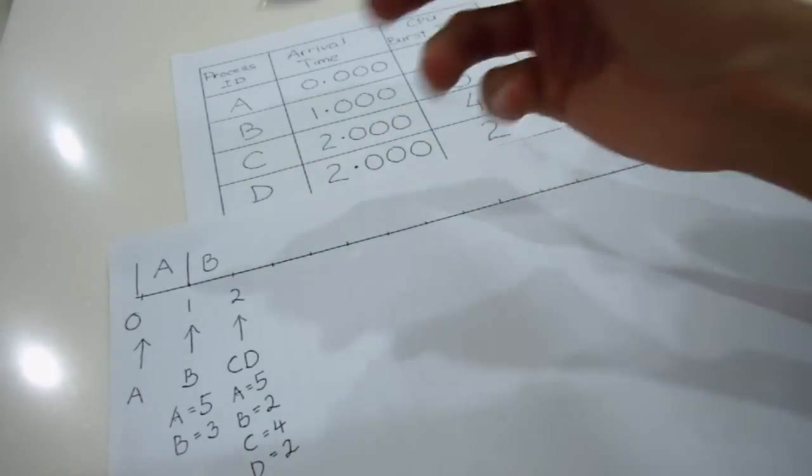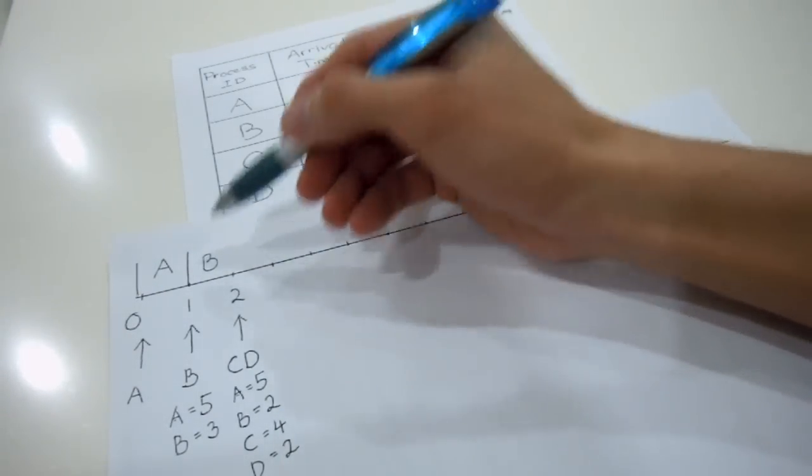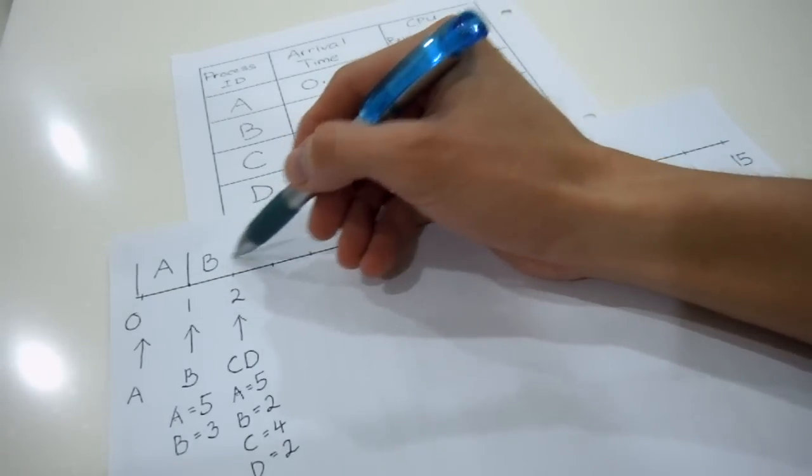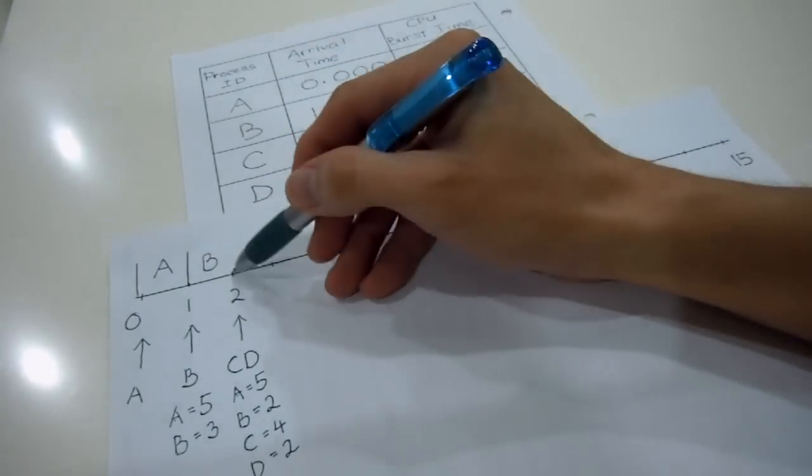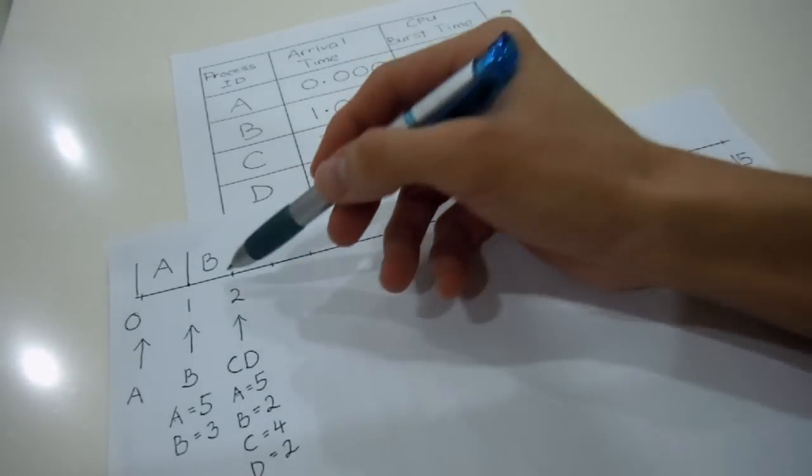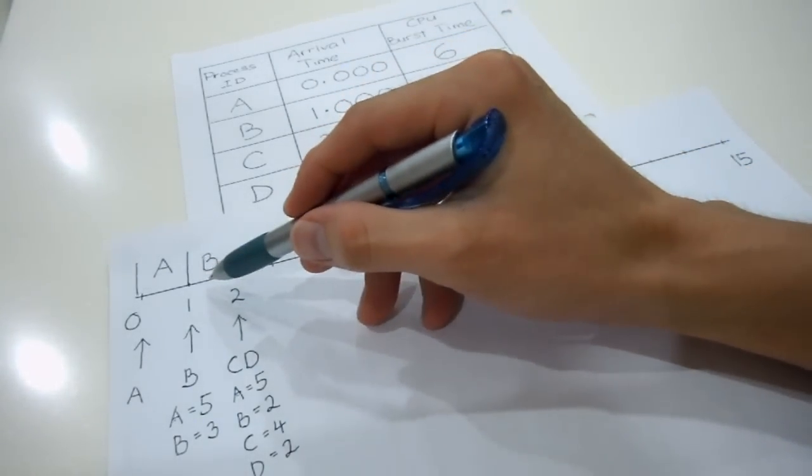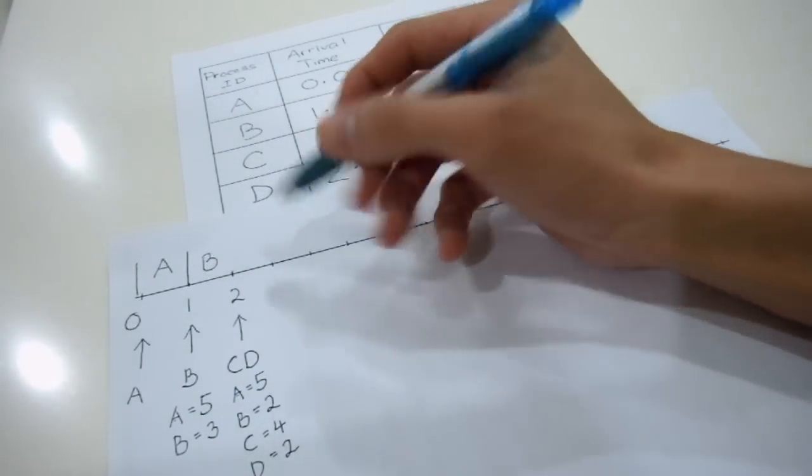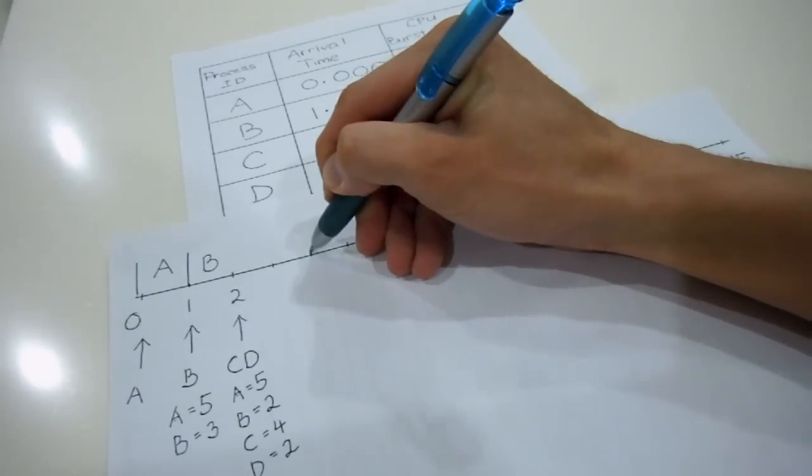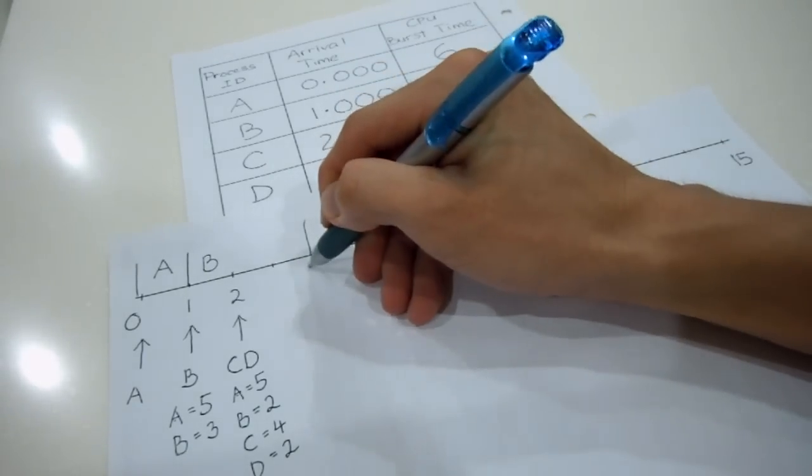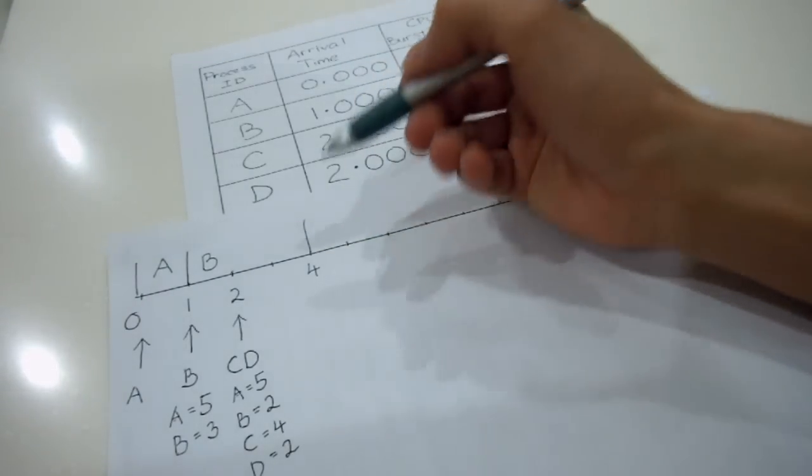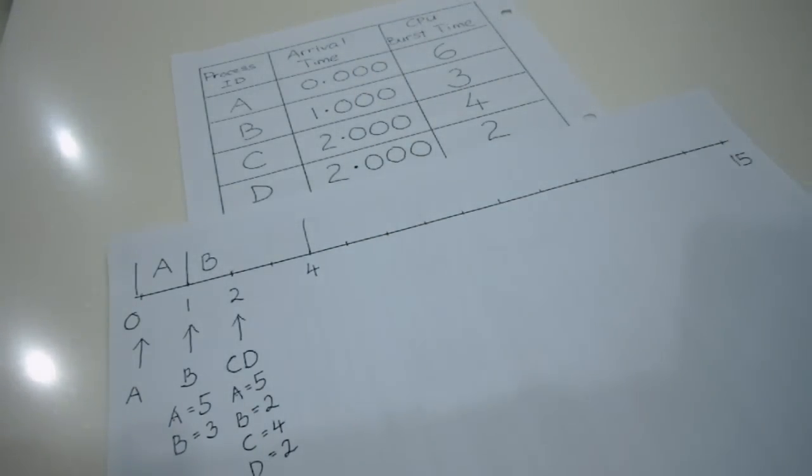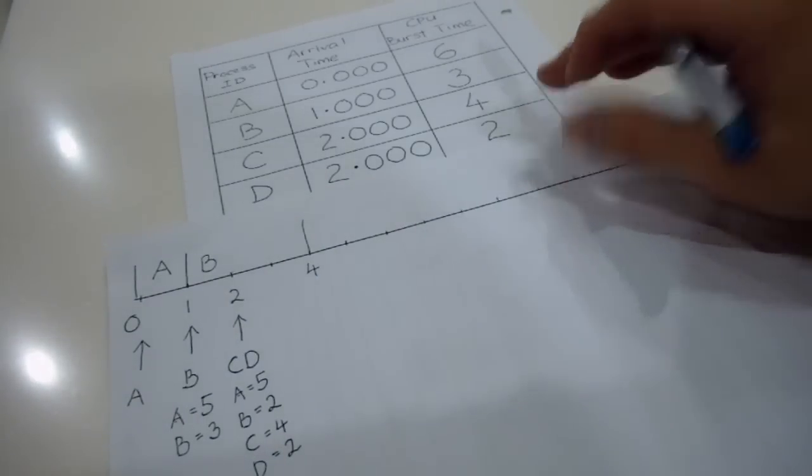So because B is going to go in, B will actually continue the process at time equals 2. And B will actually finish up the process because it's left 2, so B will actually end at time equals 4. So at time equals 4, when the process ended, again, we need to check back each of these processes' burst times again.